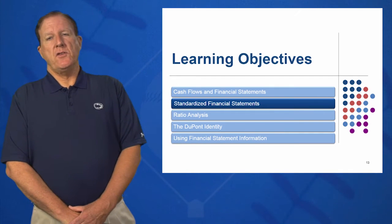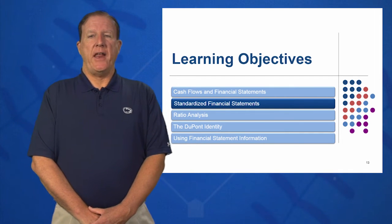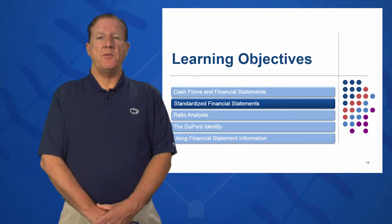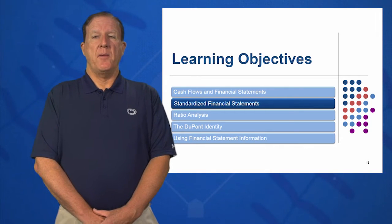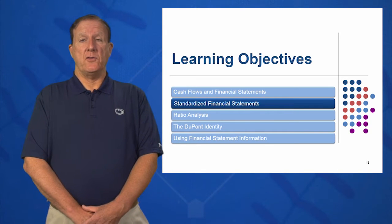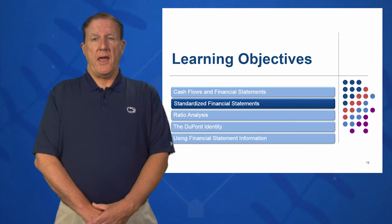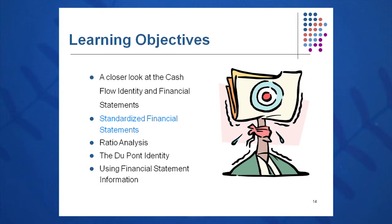The second learning objective in session three is standardizing financial statements. We will address how to standardize an income statement and how to standardize a balance sheet so that we can compare our financials to other companies' financial statements. We do this because companies are varying sizes and we want to look at aspirational firms. How does Dell manage inventory to such a low number? So if we're General Motors or Ford and we want to look at Dell, we can compare these companies on a percent of sales or percent of asset basis. Standardizing financial statements is a way to do this.